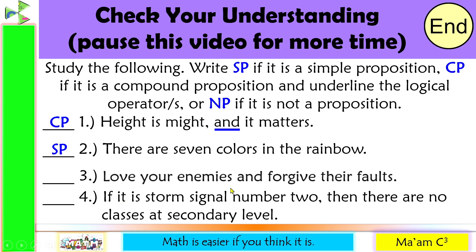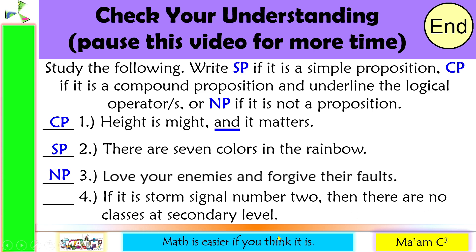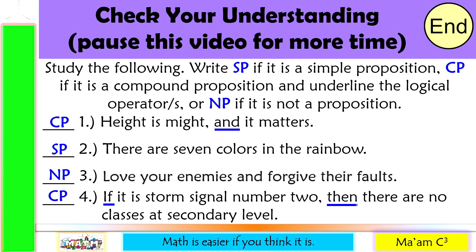Number three: 'Love your enemies and forgive their faults.' Can we break this down? Yes — 'love your enemies' and 'forgive their faults.' But wait — not just because you see the word 'and' does this become a compound proposition. Both parts are imperative sentences, so this is not a proposition. Last one: 'If it is storm signal number two, then there are no classes at secondary level.' We can break this into 'it is storm signal number two' and 'there are no classes at secondary level.' This is a compound proposition, and the logical operator used is 'if...then.'